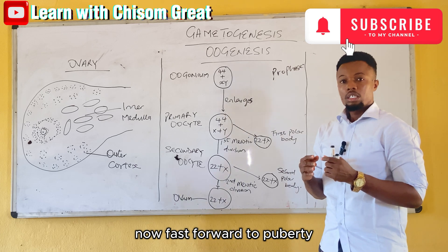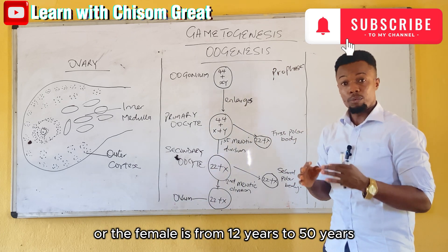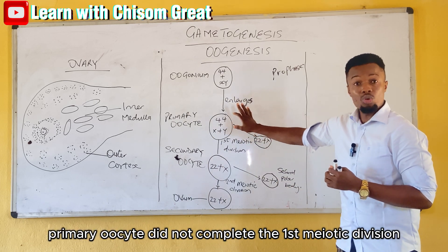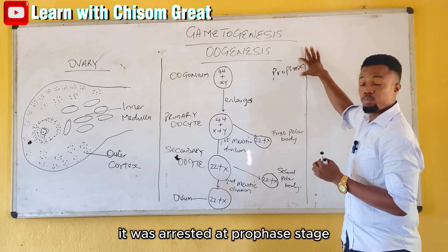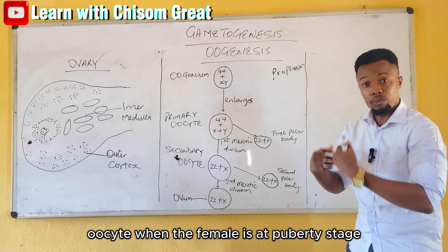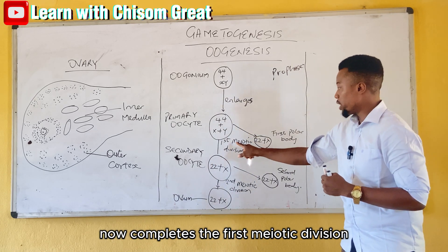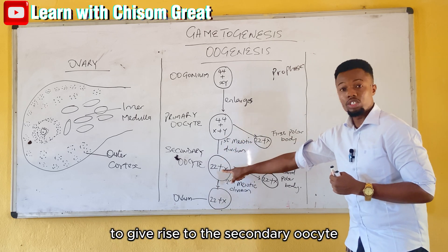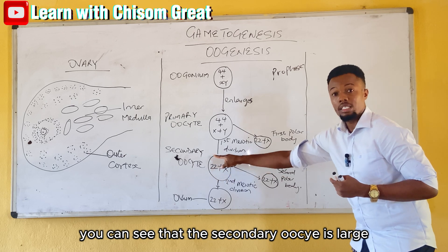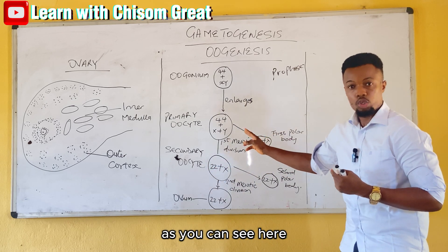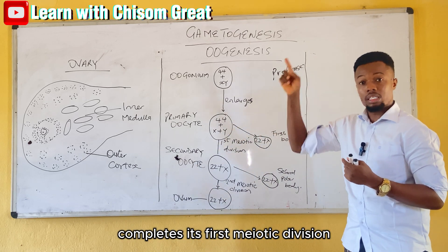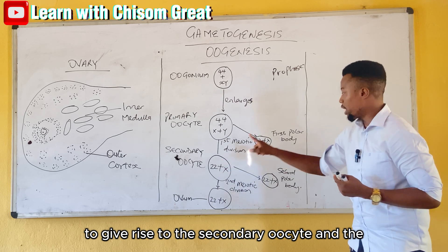Fast forward to puberty. The fertile age of the female is from 12 to 50 years, though there may be some variation. Remember that the primary oocyte did not complete the first meiotic division — it was arrested at prophase. At puberty, the primary oocyte now completes the first meiotic division to give rise to the secondary oocyte and also the first polar body. The secondary oocyte is large while the first polar body is small.